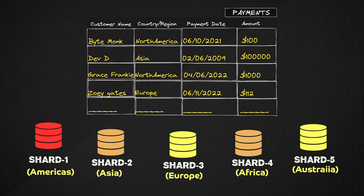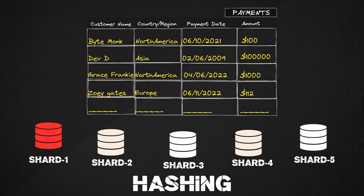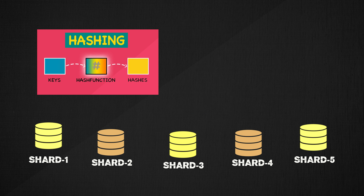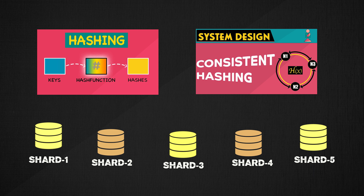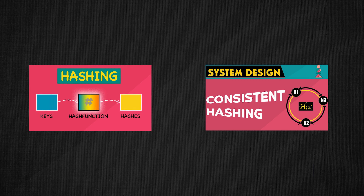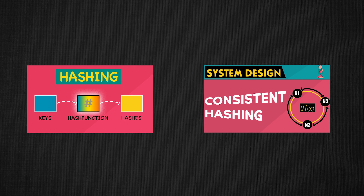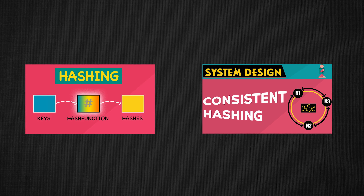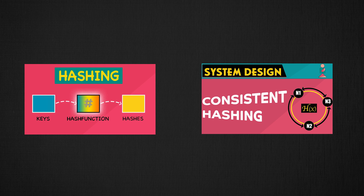A reasonable way to split up the data is hashing, which guarantees uniformity to determine what shard a piece of data is going to be written to and read from. You can check out my video on hashing and consistent hashing in my system design playlist, where I explain exactly how they can help in reducing data hotspots and handling shard failures.